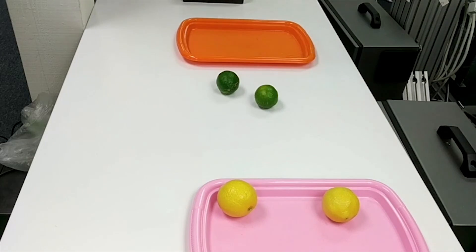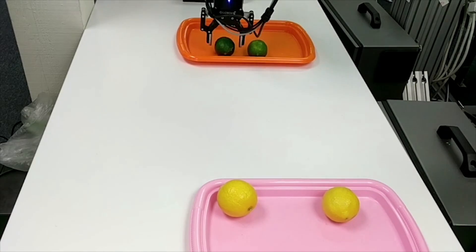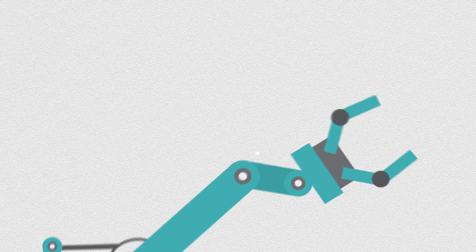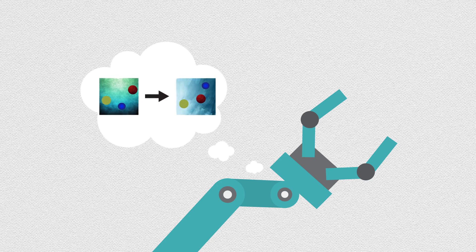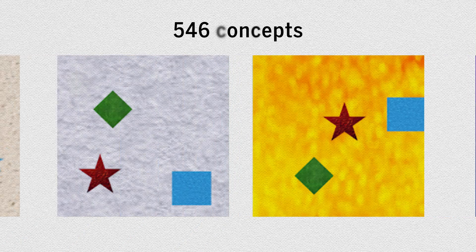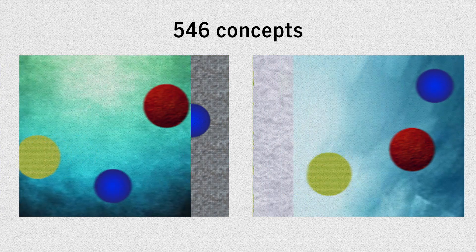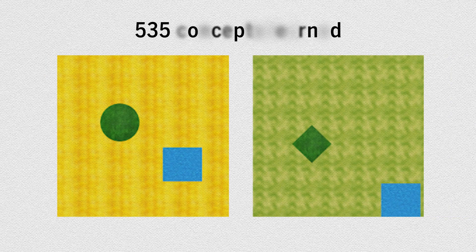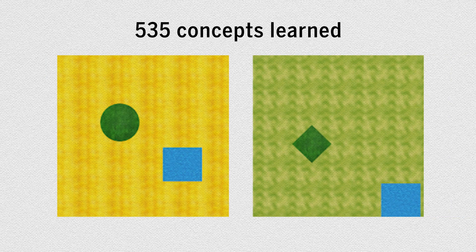It was then up to the robots to infer exactly how to rearrange the objects on the tabletop to match the output image in each concept. The robots achieved that by evaluating the different matchups in their imagination to arrive at a program that described the concept. Researchers used a dataset of 546 different concepts to test the robots, and the robots successfully learned 535 of them.